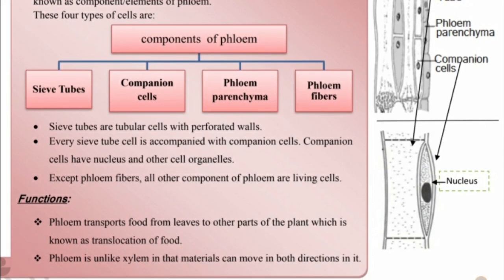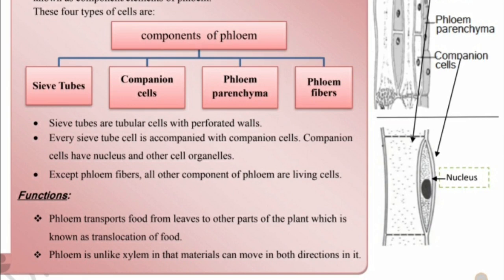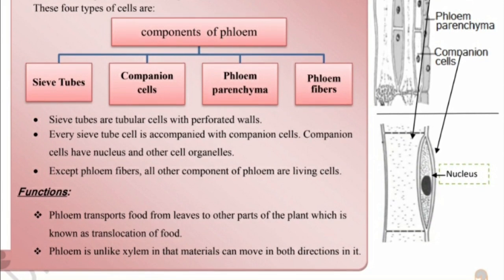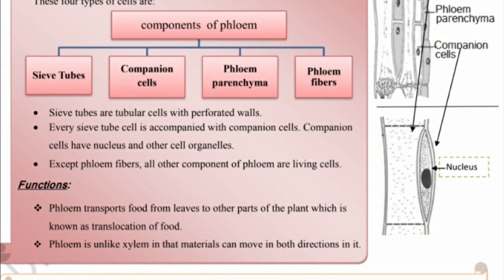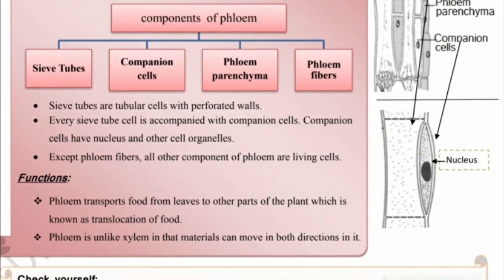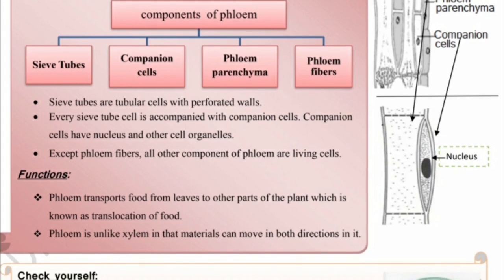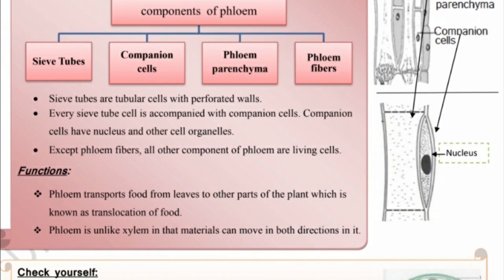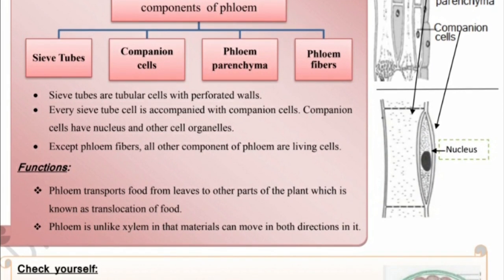Here you can see this diagram: the sieve tube, phloem parenchyma, companion cell, and nucleus are visible on the right side.